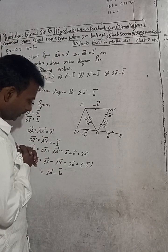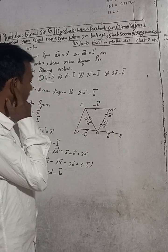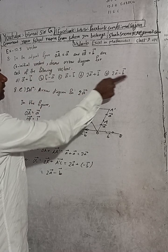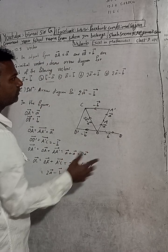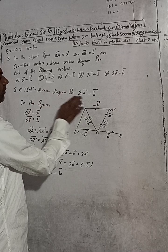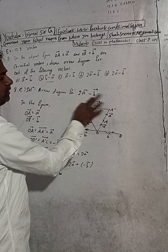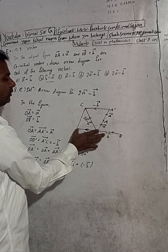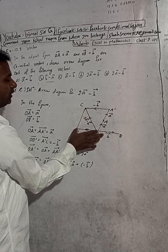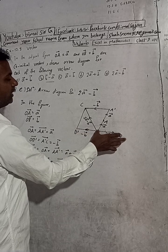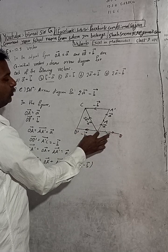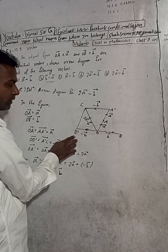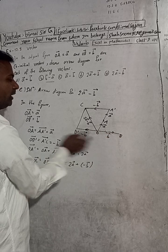So the error diagram for 2a minus b vector: what do we have to do? The error diagram for 2a minus b vector — minus b is going to be extended. This is going to extend. This is going to be b vector. If this is b, then minus b is equal to this — this is going to be minus b vector.